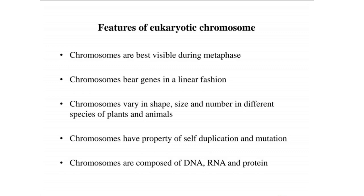Features of eukaryotic chromosomes: eukaryotic chromosomes are best visible during the metaphase stage. Chromosomes bear genes in a linear fashion, and they vary in shape, size, and number across different species of plants and animals.